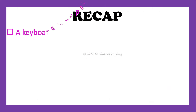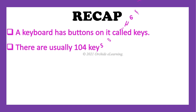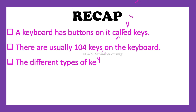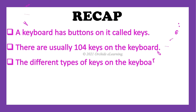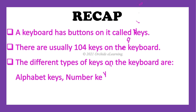Recap: A keyboard has buttons on it called keys. There are usually 104 keys on the keyboard. The different types of keys on the keyboard are alphabet keys, number keys, and arrow keys.